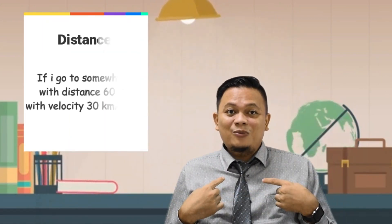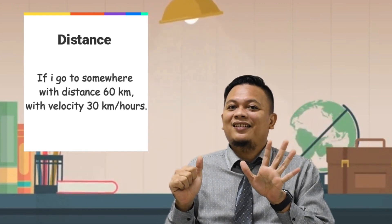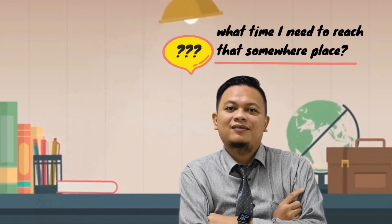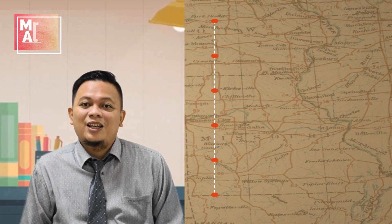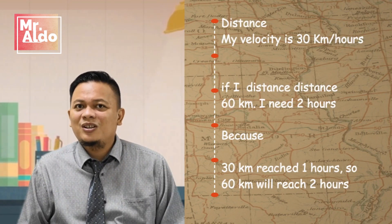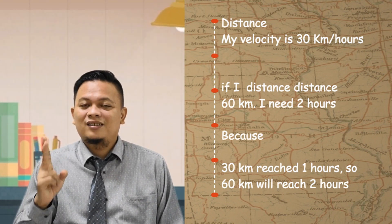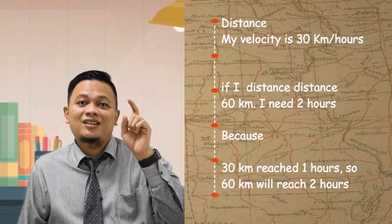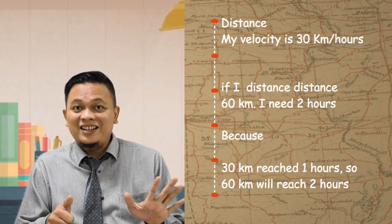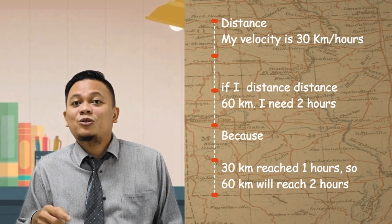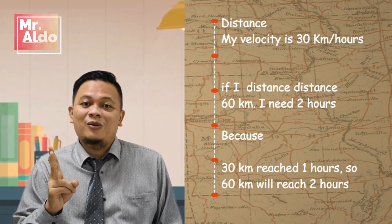Now the other problem. If I go somewhere with a distance of 60 kilometers at a velocity of 30 kilometers in 20 minutes, what time do I need to reach that place? My velocity is 30 kilometers in 20 minutes. If the distance is 60 kilometers, I need two hours. Because 30 kilometers is reached in one hour, so 60 kilometers — the time we just multiply by two. It becomes two hours.